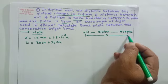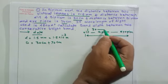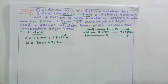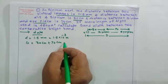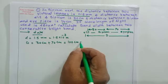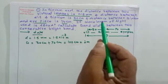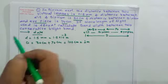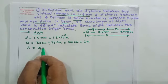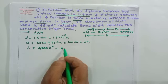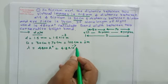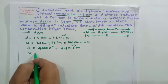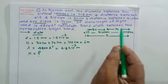So the distance between slit and eyepiece is capital D. Given in the question: distance between slit and biprism is 30 cm, and biprism to eyepiece is 70 cm. If we add them, capital D equals 100 cm, which is 1 meter. The wavelength of light is 4800 angstrom units, meaning 4.8 × 10⁻⁷ meter. We need to calculate the bandwidth between two consecutive bright bands.